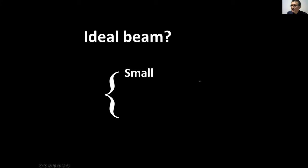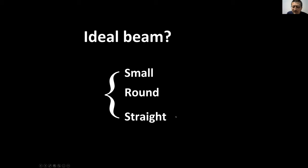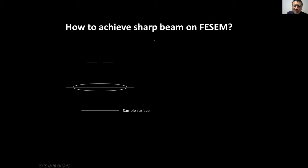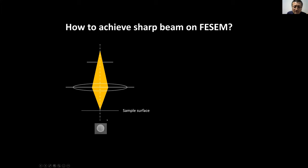So an ideal beam needs to be: small (for better resolution), round in shape, and straight (well-aligned). How do you achieve a sharp beam? As a user, one thing we can do is focus the beam. When we focus the beam correctly onto the sample surface, we get a sharp image. If the focus is below the surface (under-focus) or above (over-focus), the cross-section of the beam is bigger and the image won't be clear.